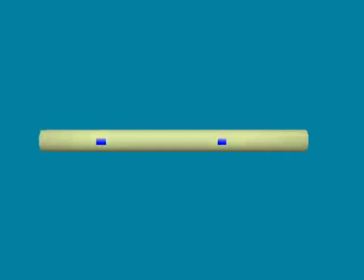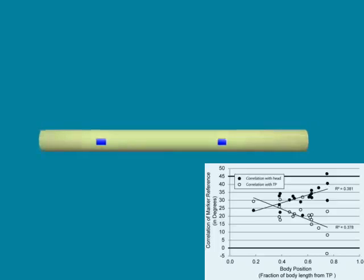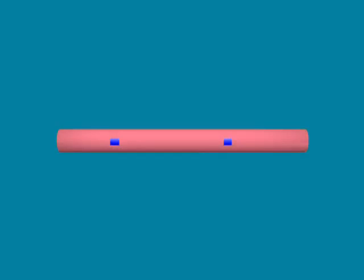We found a linear relationship between position and marker reference correlation, indicating that the gut changes length throughout crawling, shortening throughout the terminal proleg swing phase, and re-lengthening during the stance phase.